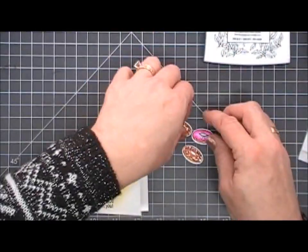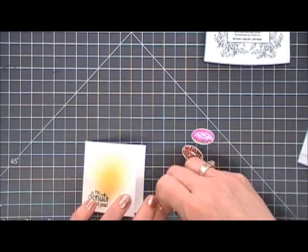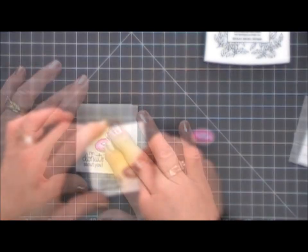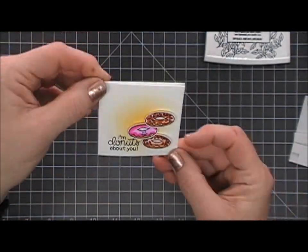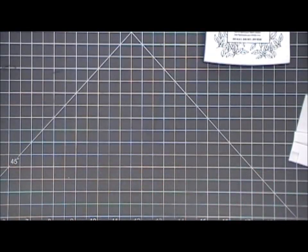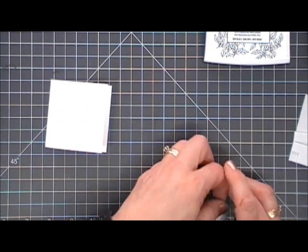I'm just going to add a little bit of color in the center. Add some foam tape behind each of my little donuts and place them right next to my little sentiment. These ones I kind of stacked a little bit.